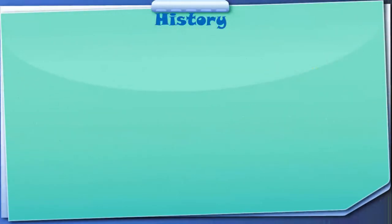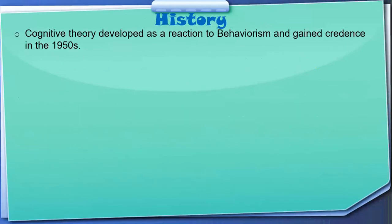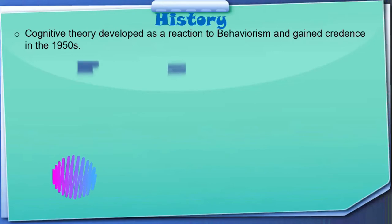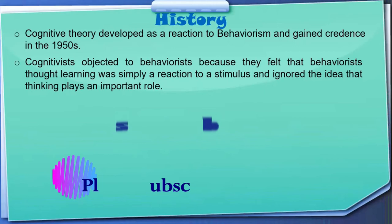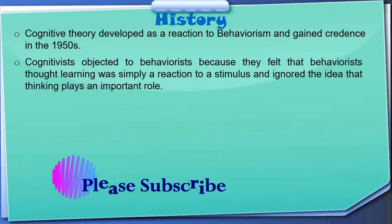What is the historical view of cognitivism? Cognitive theory developed as a reaction to behaviorism and gained credence in the 1950s. Cognitivists objected to behaviorists because they felt that behaviorists thought learning was simply a reaction to a stimulus and ignored the idea that thinking plays an important role.